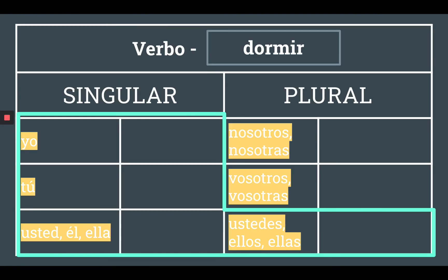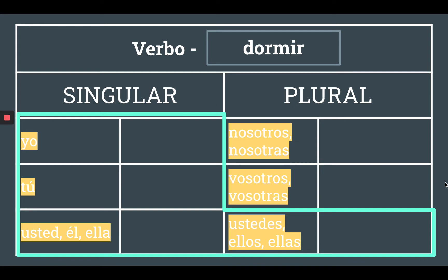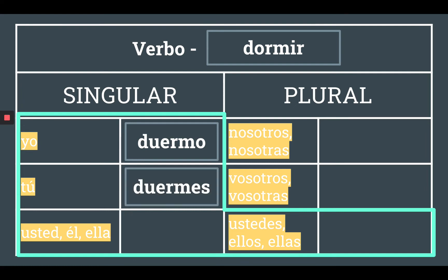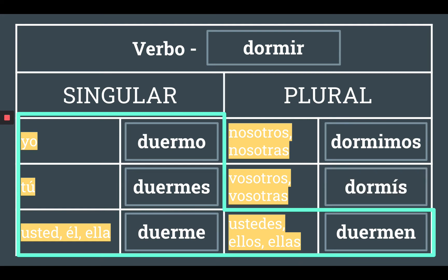If we draw our figure, everything inside is going to stem-change. So yo is going to be duermo. Tú duermes. Usted, él, ella duerme. Ustedes, ellos, ellas duermen. Then nosotros and vosotros are outside of the figure, so they are not going to stem-change — they're going to keep that O. Nosotros is going to be dormimos, and vosotros is going to be dormís.